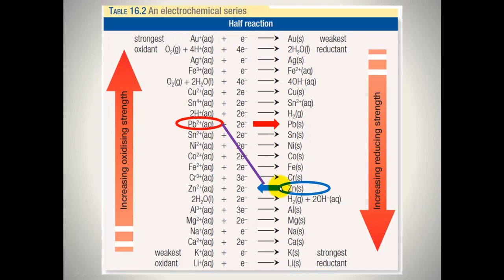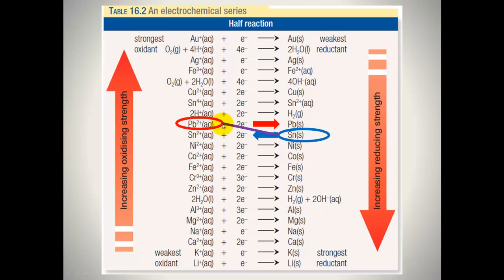They can be closer together. So you've got lead ions here reacting with a reductant below it on the right hand side. This bottom reaction goes in a backwards direction. They can even be one apart from one another, as long as the reductant is below and on the right hand side of the oxidant.